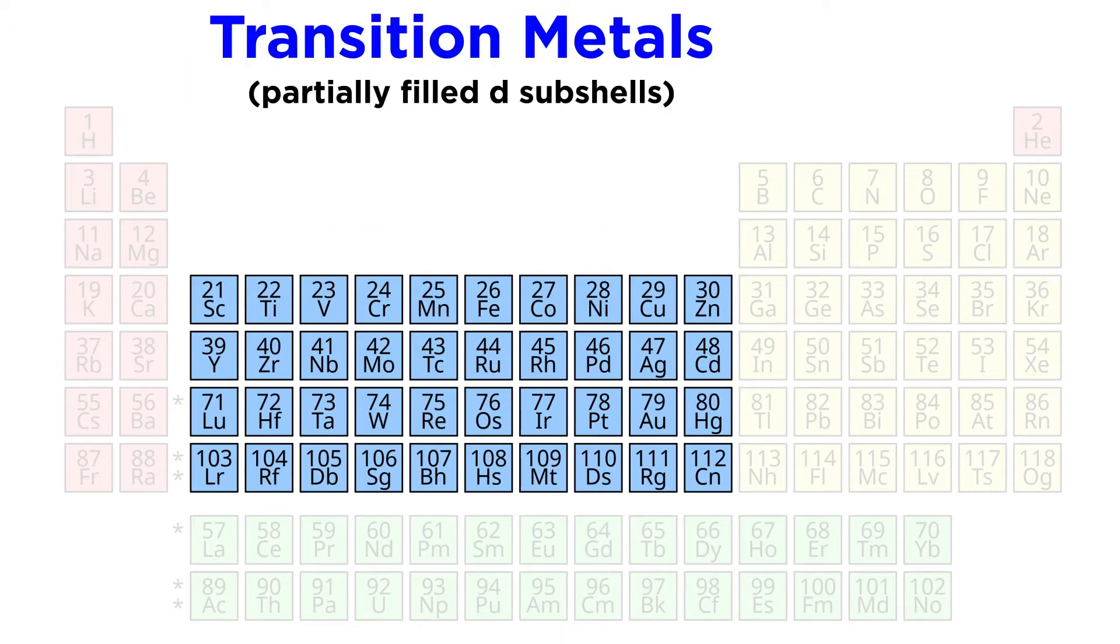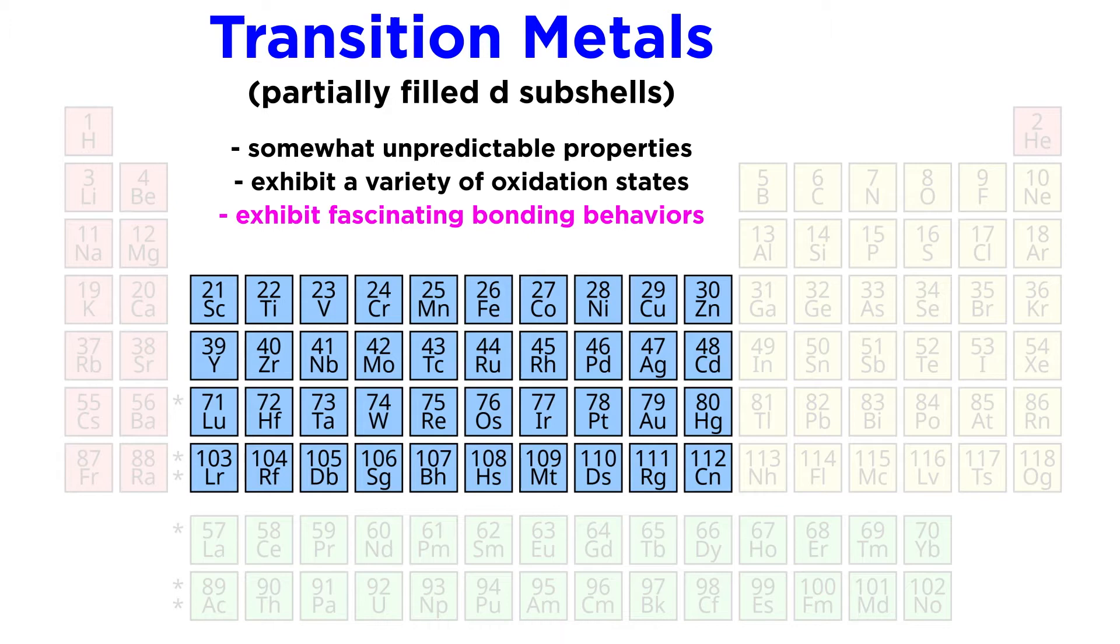Due to their partially filled D subshells, these elements are also called transition metals, although group 12 itself technically does not qualify for this term since elements in this group do have a completely full D subshell. Now the tricky thing about transition metals is that their properties are not as predictable as the elements in the S and P blocks. Most transition metals exhibit a variety of oxidation states, and they have fascinating bonding behaviors, as we will learn progressively throughout this series.